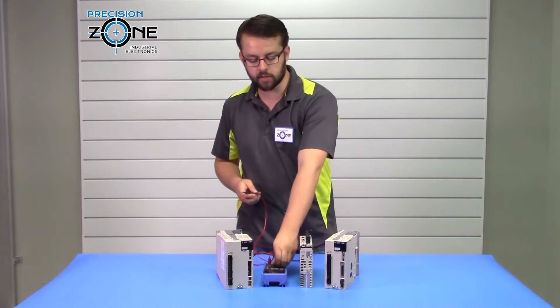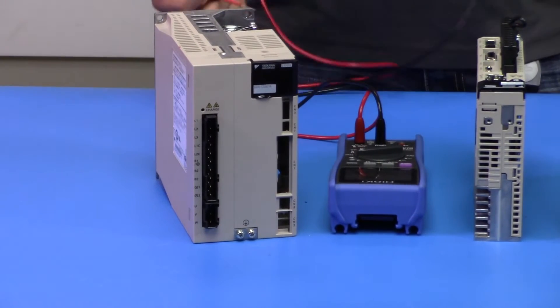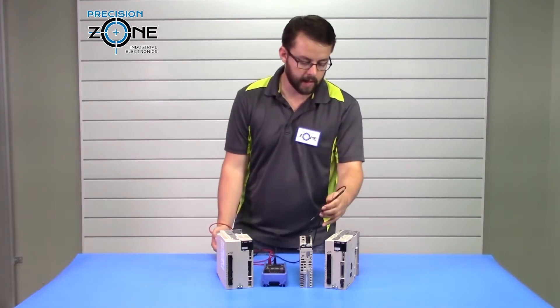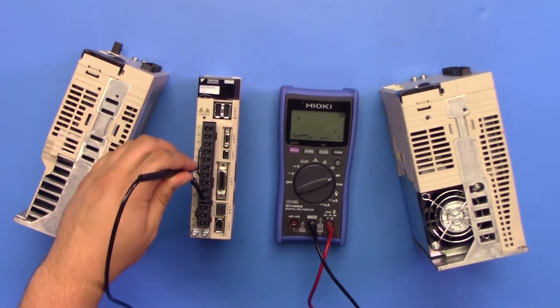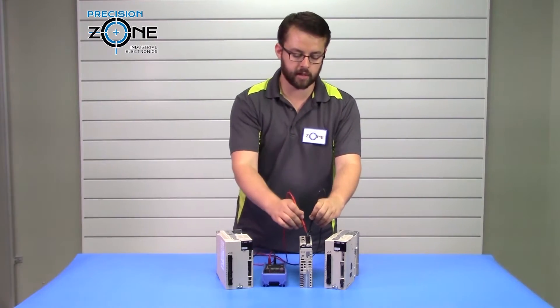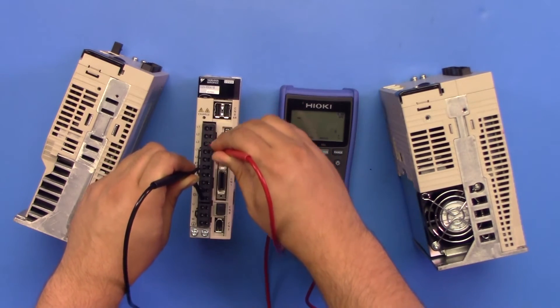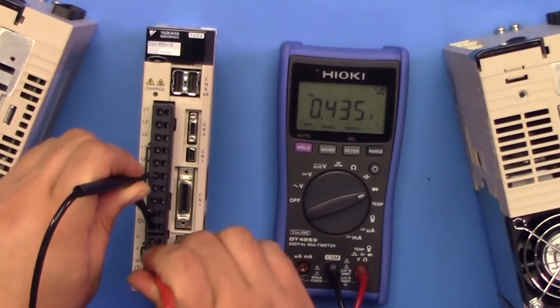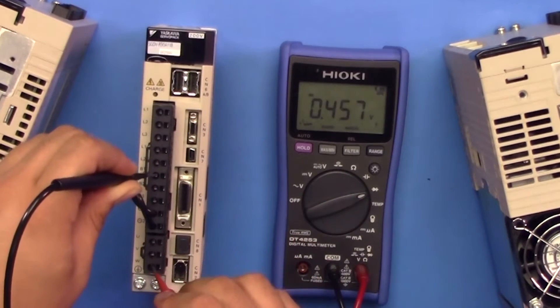So to begin, you want to set your digital multimeter to the diode test function. You want to get the negative side of the digital multimeter and connect that to the positive side of the DC bus, which would be at B1. And you're going to want to check your inputs at L1, L2, and L3, which should be about 0.48 volts. You then want to check your outputs at UVW. That's going to be about 0.43 volts, and that should be normal.